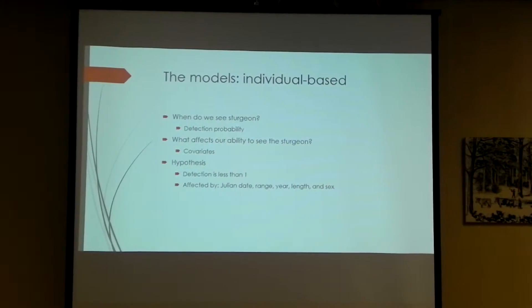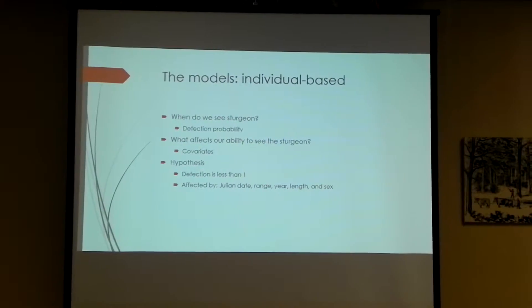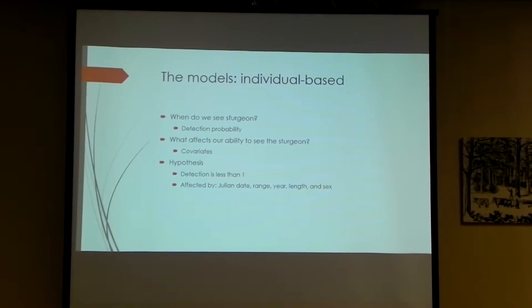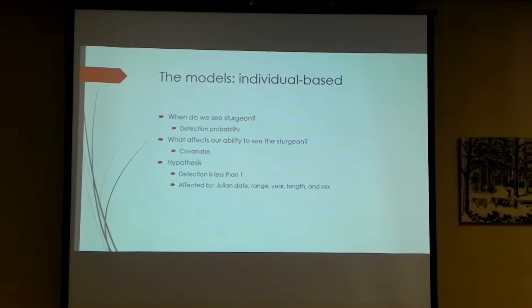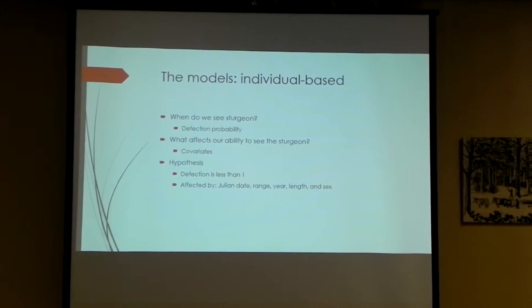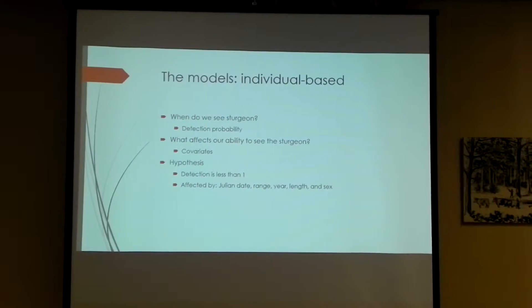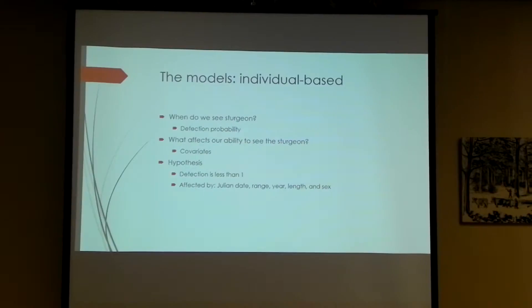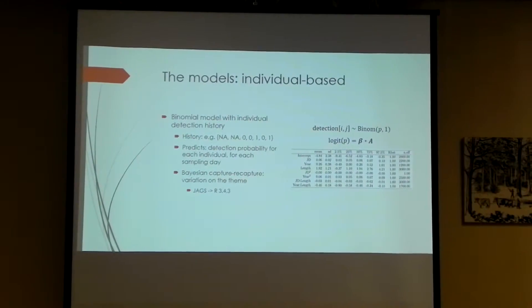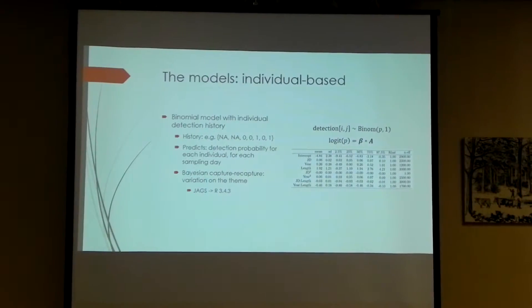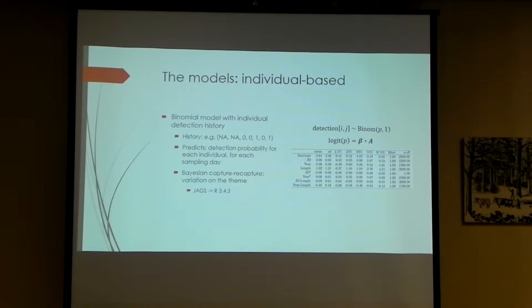So individual-based. When do we see the sturgeon? We can translate this as a detection probability. And what affects our ability to see the sturgeon are the covariates of the model that we put in. And our working hypothesis for this model is that detection is less than one. If it is one, that's great. You always see your sturgeon. But typically you see detections less than one. And we suspected that this detection was affected by the date and the search range perhaps, the year. Maybe it changes over the years. Maybe it changes depending on the size of the fish, the sex of the fish. Especially since we notice we have 29 males and four females. Is there a difference there?